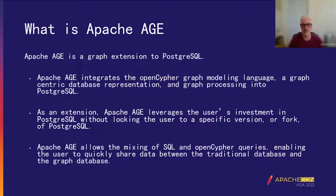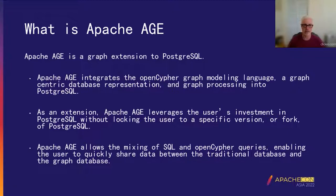What is Apache AGE? Apache AGE is a graph extension to the Postgres database. Apache AGE integrates the OpenCypher specification graph modeling language, a graph-centric database representation, and graph processing into the Postgres database. As an extension, Apache AGE leverages the user's investments — such as developers, infrastructure, and data in Postgres — without locking the user to a specific version or fork of Postgres itself. Additionally, Apache AGE allows the mixing of SQL and OpenCypher queries, enabling the user to quickly share data between the traditional relational style database of Postgres and the OpenCypher graph database of AGE.